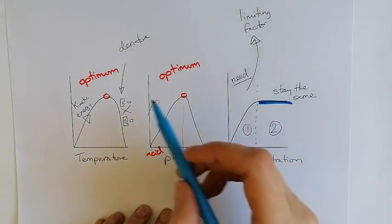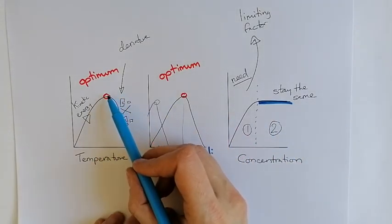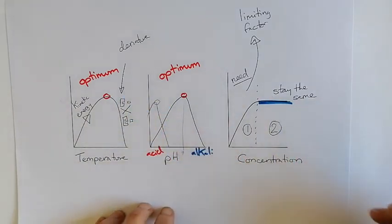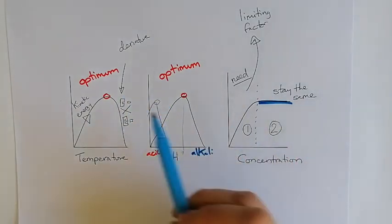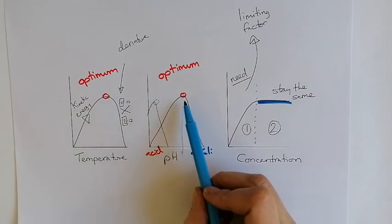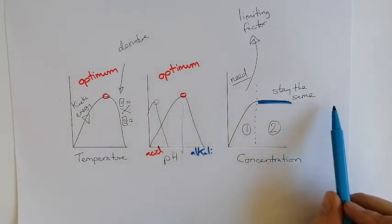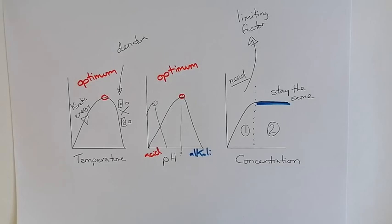Most of the time, you will find that the optimum for pH, for temperature and concentration are around the same. So this is the optimum rate, this is the optimum rate, and this is the highest point as well. So temperature, pH and concentration are needed to be kept the same or kept at a special rate called the optimum in order to make enzyme reactions work really well.